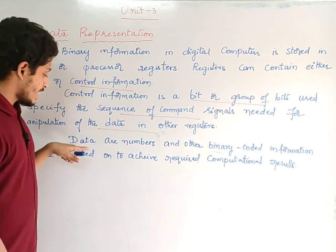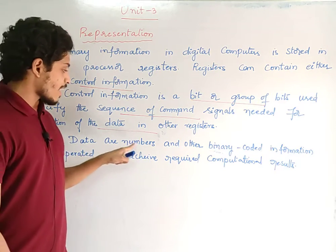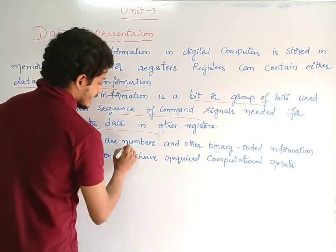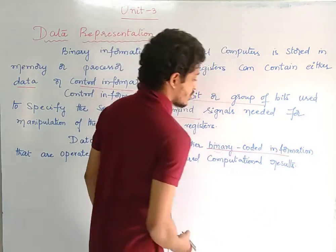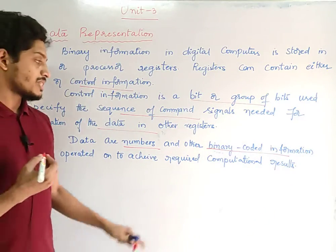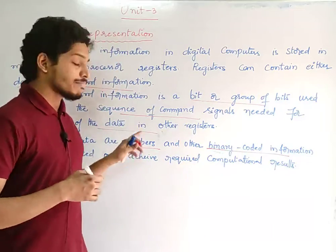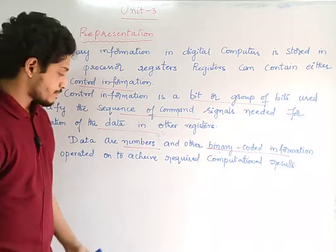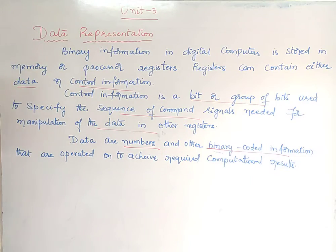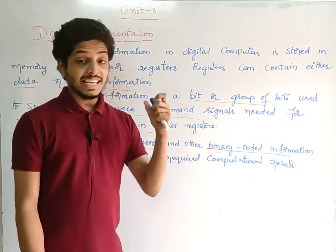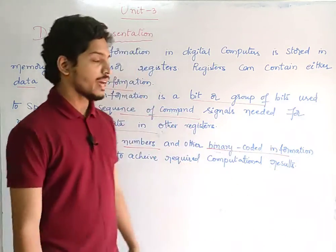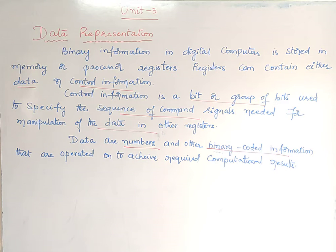Data represents numbers or other binary coded information. Binary coded information uses a binary number system — 0s and 1s — and there are numbers in a hexadecimal number system: A, B, C, D. These are operated to achieve required computational results. Data represents the main task.